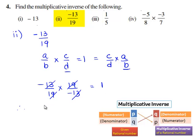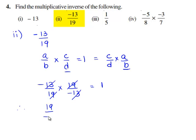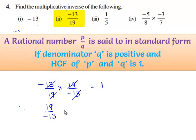the multiplicative inverse of minus 13 by 19 is 19 by minus 13, but the rational number has to be in its standard form. Therefore,